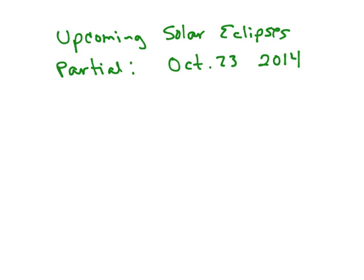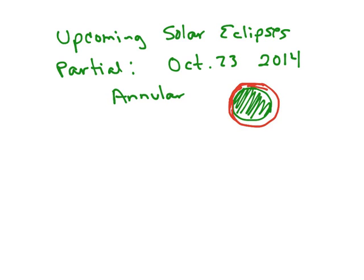Another one in 2015 is partial but you need to be in Africa, India, or Antarctica. There's a total in March 2016 for Asia, Australia, and the Pacific. September 2016 has an annular eclipse — where the moon is a little farther from the earth so it doesn't completely cover the sun; you get a ring of light around it. The word annulus means ring. That one's visible from Africa and the Indian Ocean, and again not from North America. Another annular is visible for South America, the Atlantic Ocean, Africa, and Antarctica.